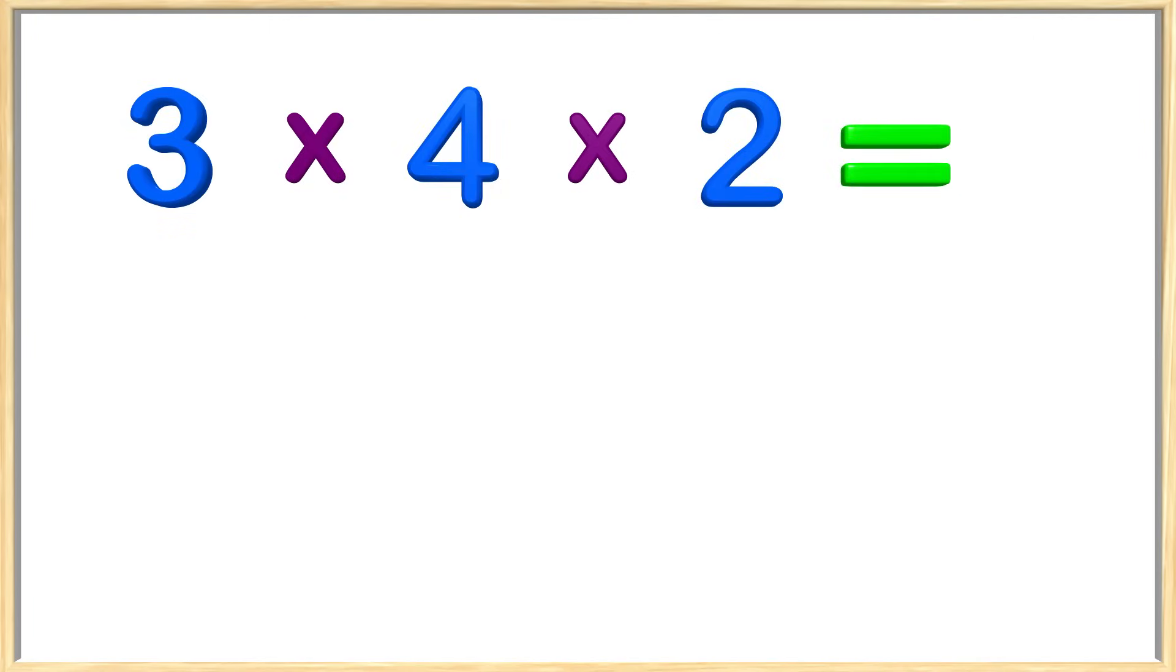Here we have an example of this concept: three times four times two. We are multiplying three digits, but where should we start? We could start with three times four, or we could start with four times two. The associative property tells us it does not matter which way we do it. We can choose which group of numbers we start to multiply. That is kind of cool.